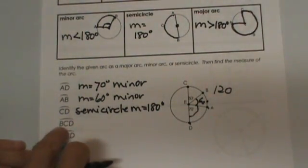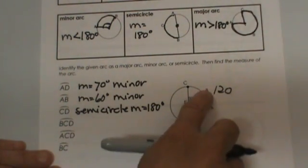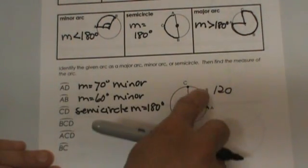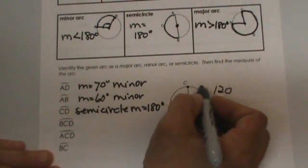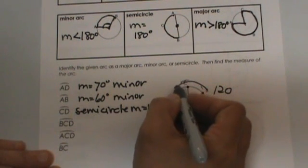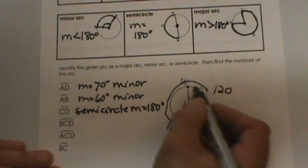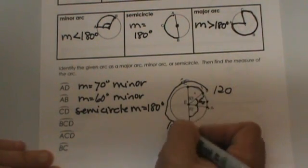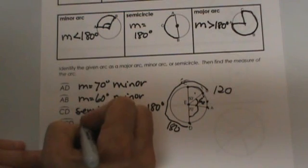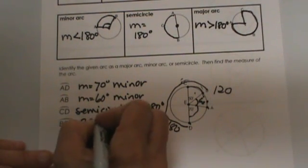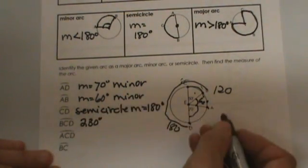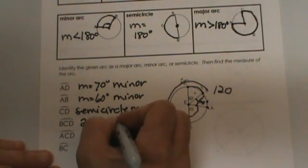So let's try this one. B, C, D. That means my end points are B and D but it has to go through point C to get there. So it is not this direction but it is this direction from B through C to D. So B to C from C to D. Well we know C to D is 180. And then we have an extra 50. So we can add those two together and that gives us 230 is the measure. And we know that that is greater than 180 so it is a major arc.